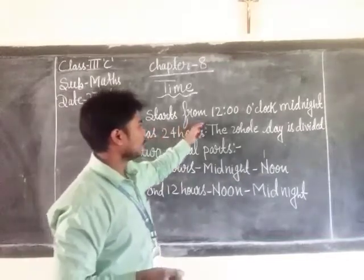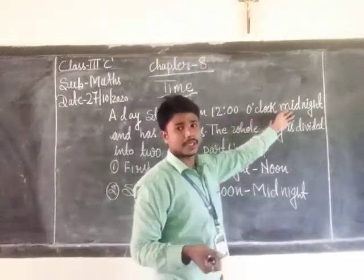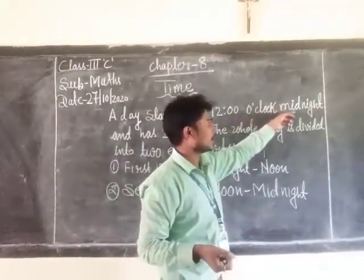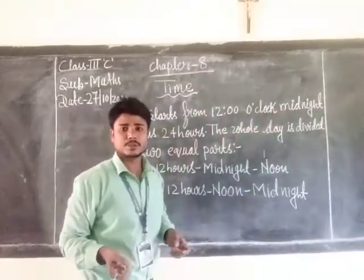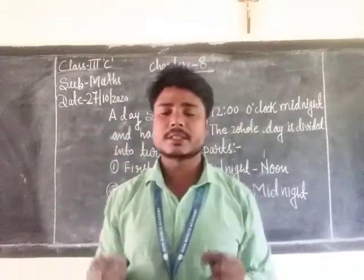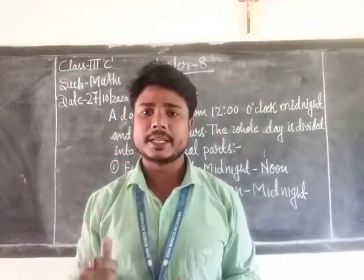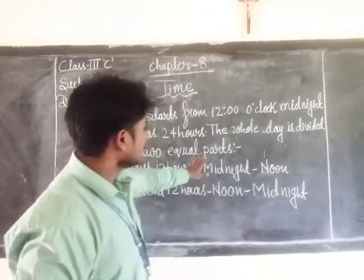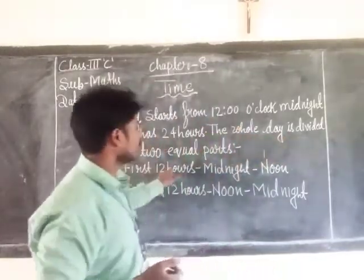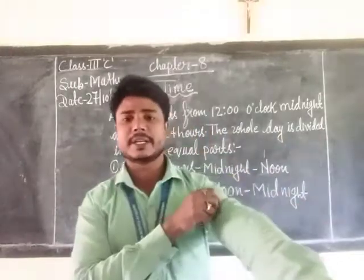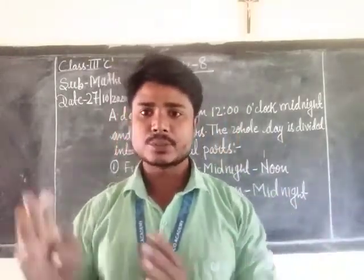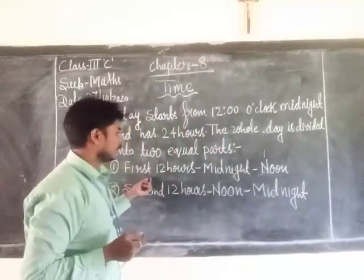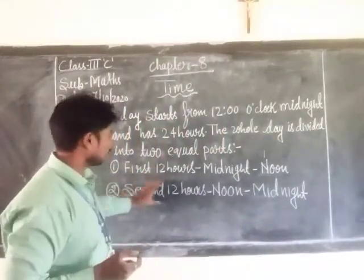A day starts from 12 o'clock midnight and has 24 hours. So, our day begins with midnight. And in a day, there are 24 hours. The whole day is divided into two equal parts — first 12 hours and second 12 hours.